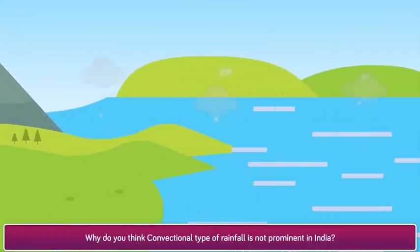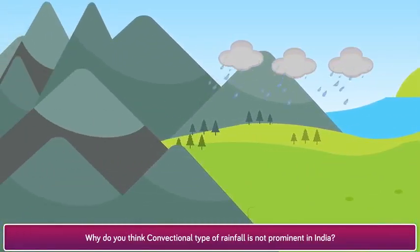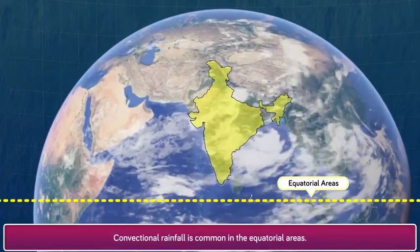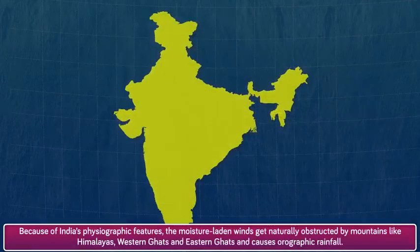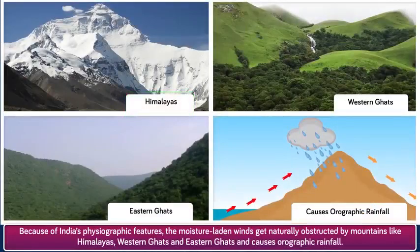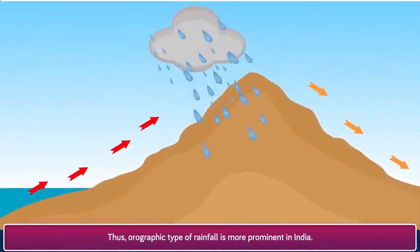Why do you think convectional type of rainfall is not prominent in India? Convectional rainfall is common in the equatorial areas. India is a tropical country, but the equator does not pass through India. Because of India's physiographic features, the moisture-laden winds get naturally obstructed by mountains like the Himalayas, Western Ghats, and Eastern Ghats, and cause orographic rainfall. Thus, orographic type of rainfall is more prominent in India.